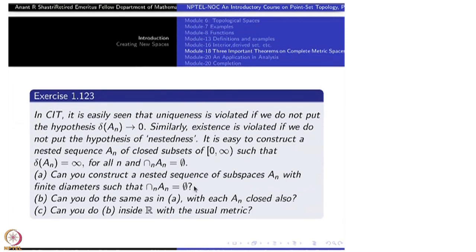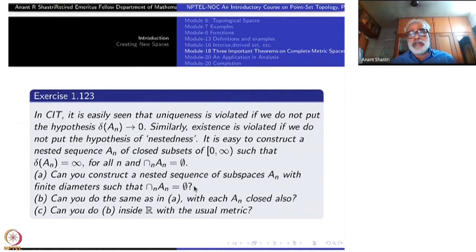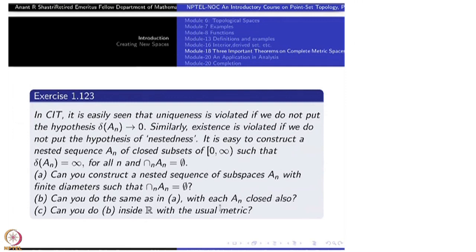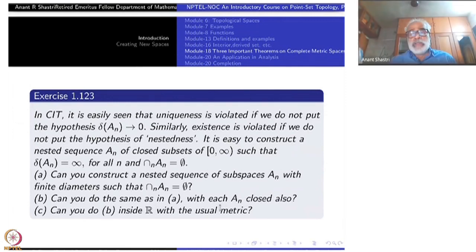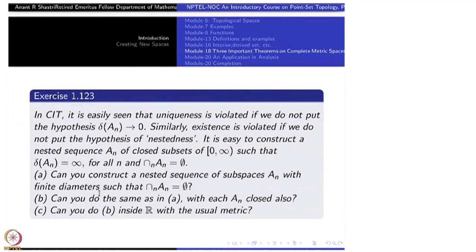Now think of some subsets of open interval (0,1). Open interval (0, 1/n). Instead of going up n to infinity, (0, 1/n). Intersection will be empty. Now can you do the same thing as you did in (a), but this time A_n must be all closed. Closed subsets, nested, that is all. Diameters I am not putting, diameters can go to 0. Is it possible? This is a little more harder.